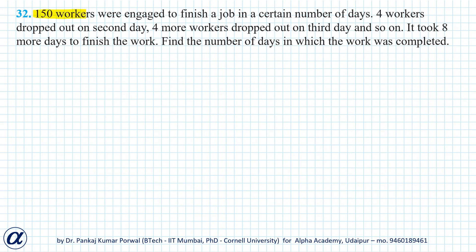In this question, 150 workers were engaged to finish a job in a certain number of days, but things did not work out as planned. Workers started dropping out — four workers dropped out on the second day, four workers dropped out on the third day, and so on. Four workers continued dropping out on every subsequent day, so it took eight more days to finish the work. We want to find the number of days in which the work was completed.